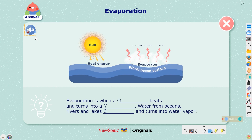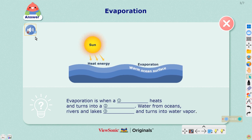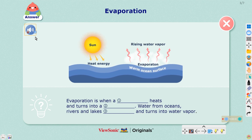When the sun heats bodies of water, the water evaporates and turns into a gas called water vapor. The water vapor then rises into the Earth's atmosphere.